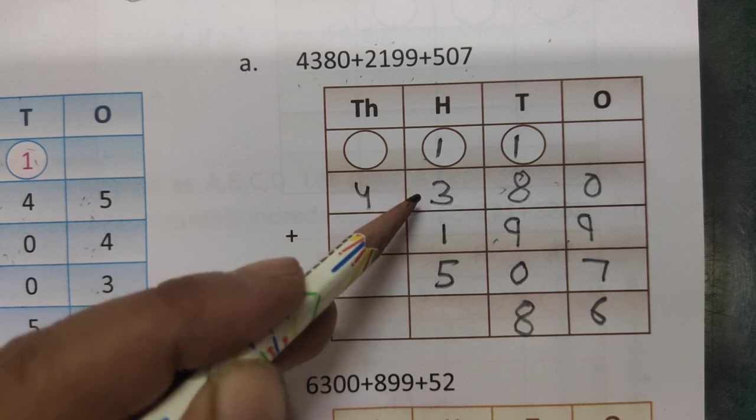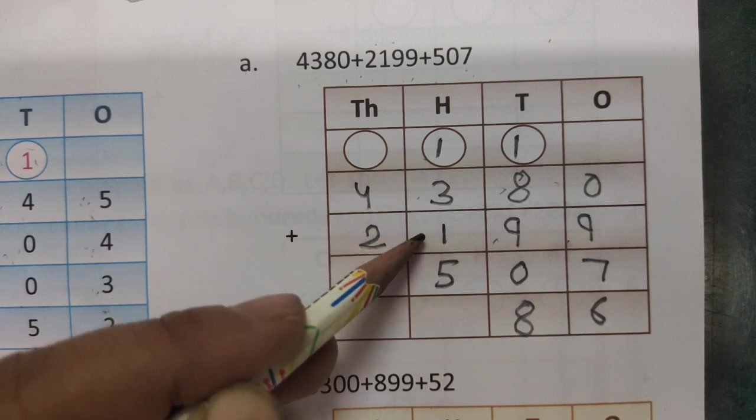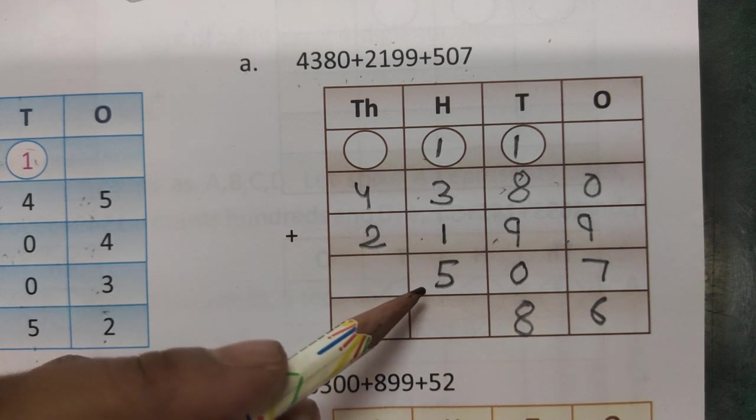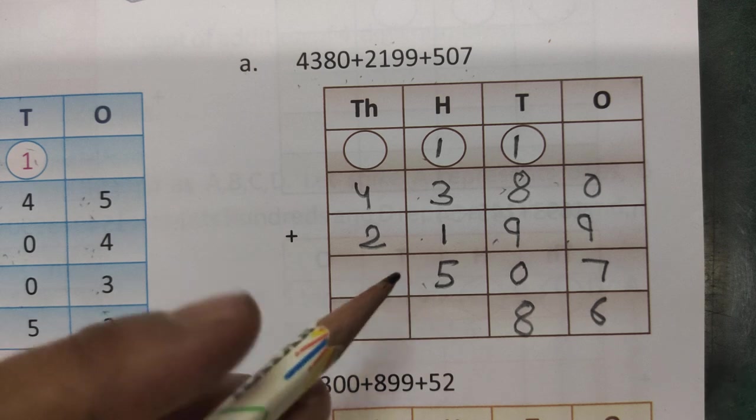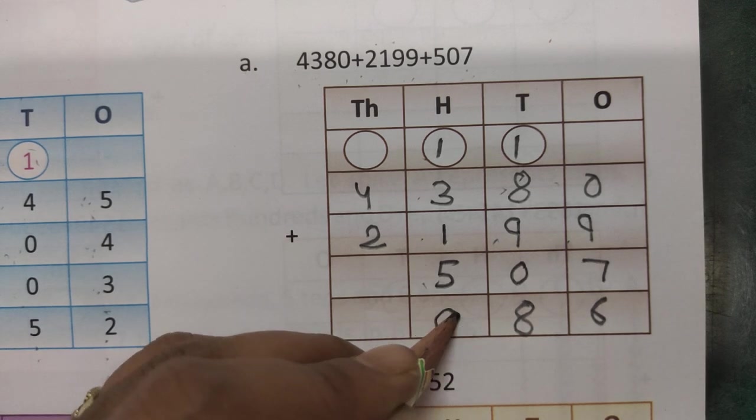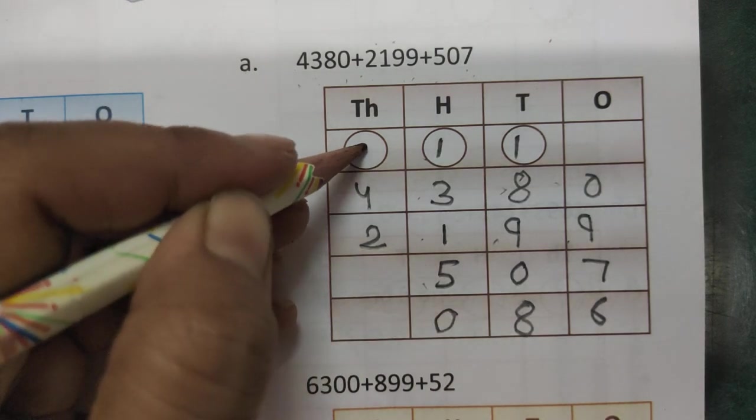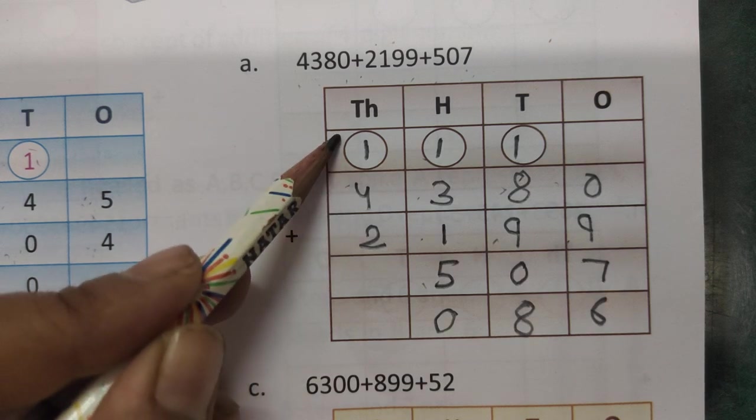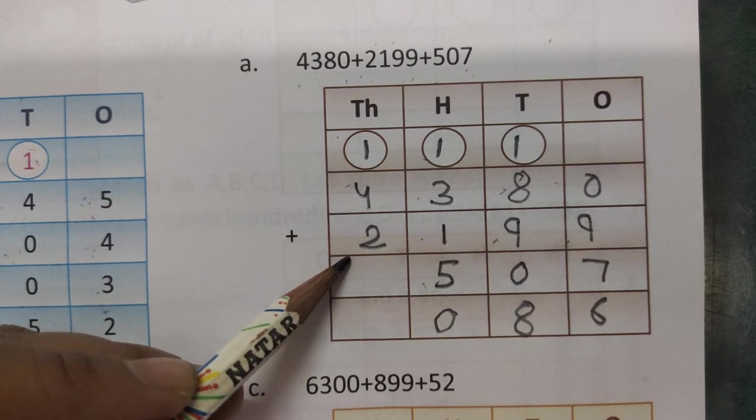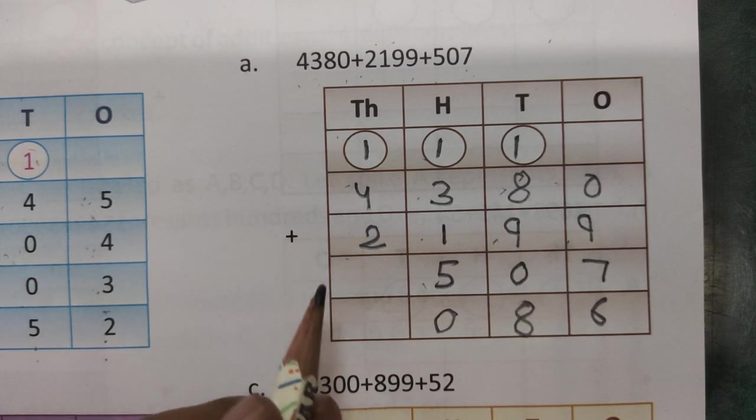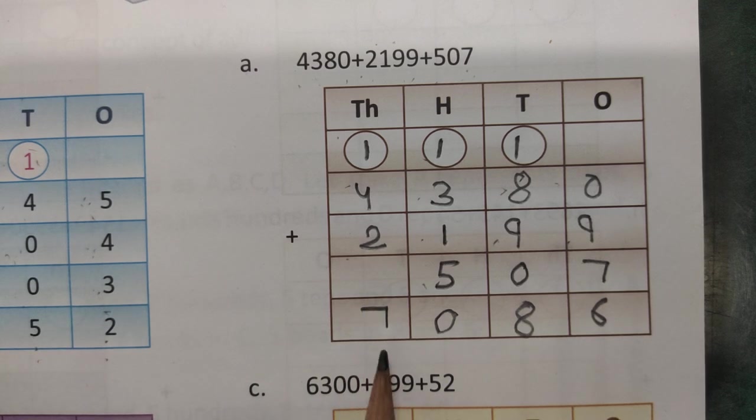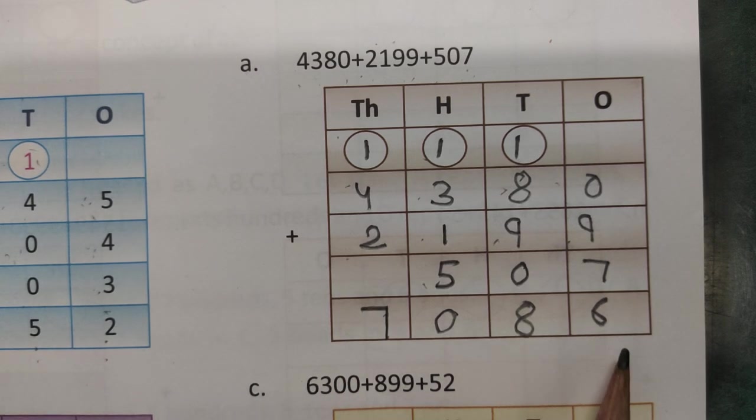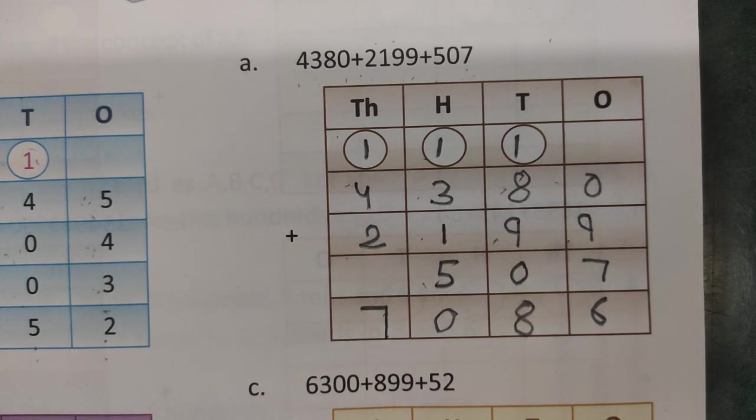Add this number 1 and 3 is 4, 4 and 1 is 5, 5 and 5 is 10. So 0 and 1 carry over 1000 place. 4 and 1 is 5, 5 and 2 is 7. So answer is 7086. Is that clear?